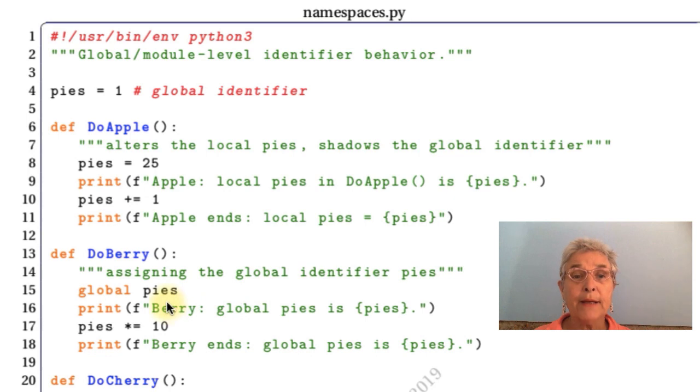Taking a look at Berry, we see we have done on line 15 a global declaration. That doesn't mean we're declaring pies. We are declaring that pies is in the global space, so it's for declaring it as a global. When I report pies, we get one, the pies that were defined on line 4. I bump them up by 10, and you'll see that we get to 10.